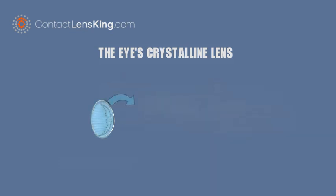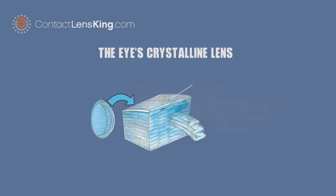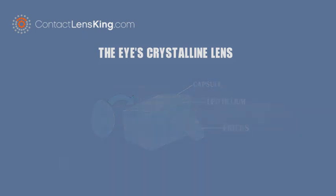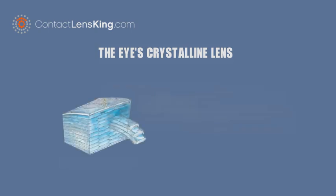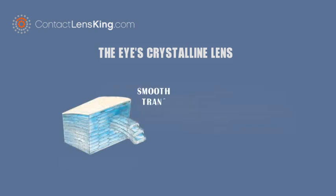The lens consists of three main parts: the lens capsule, the lens epithelium, and the lens fibers. The lens capsule is the outermost layer of the lens and is smooth, transparent, and very elastic.